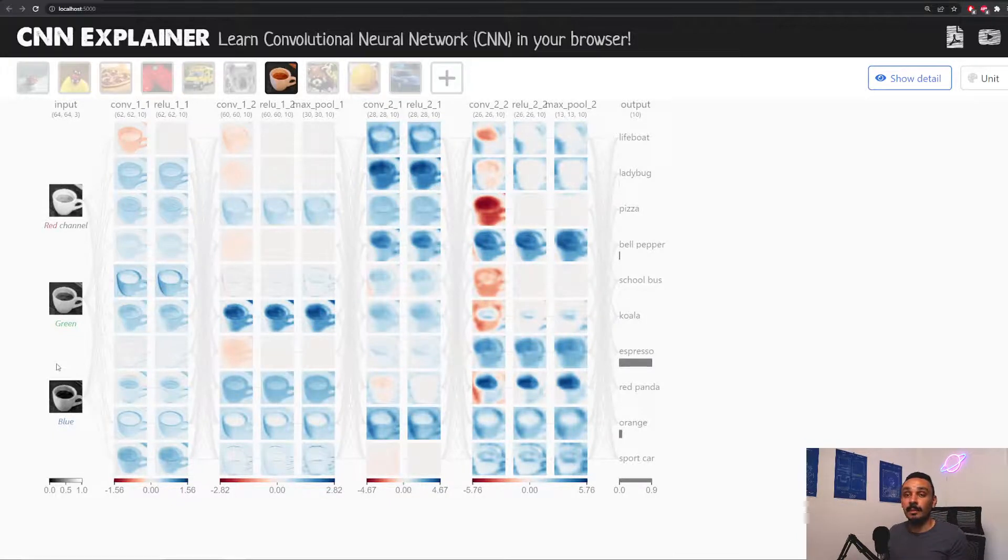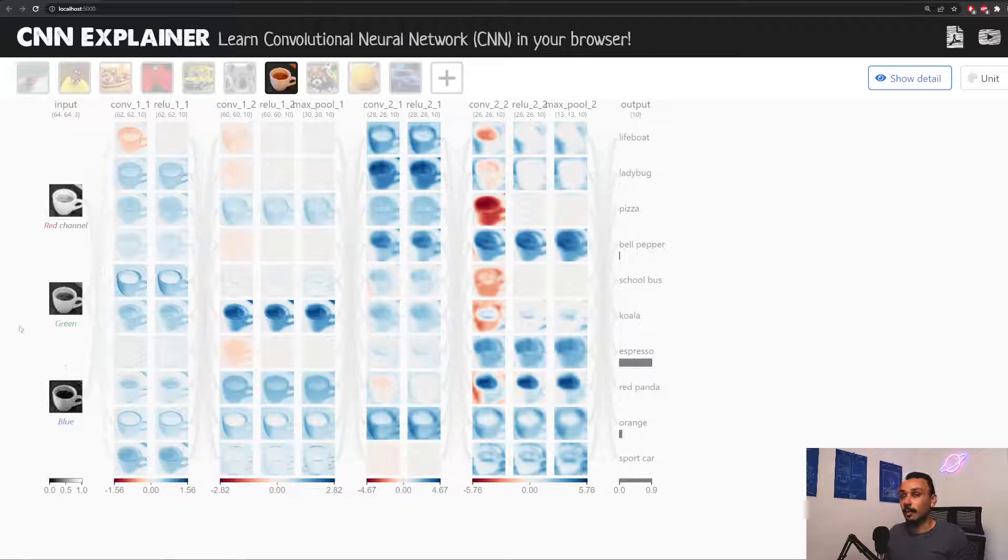So if we're analyzing the same cup of coffee picture that we were working on before, you can see that it will have three channels, because colored photos are RGB, so red, green, blue. Now let's zoom in at what happens on each channel.